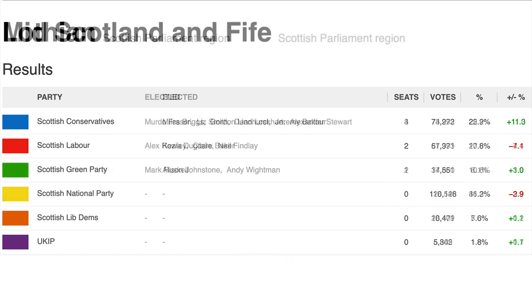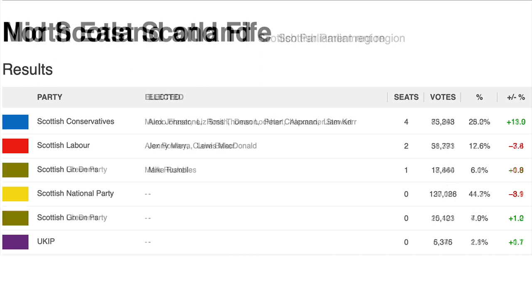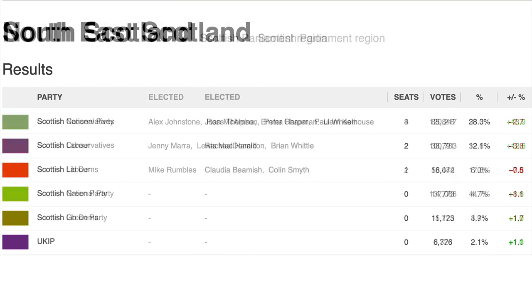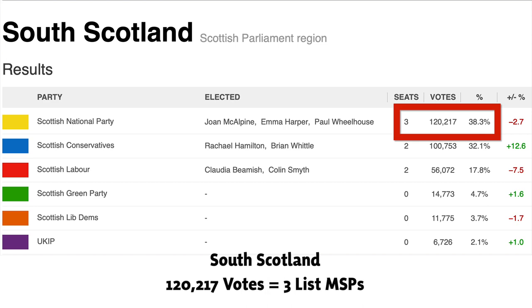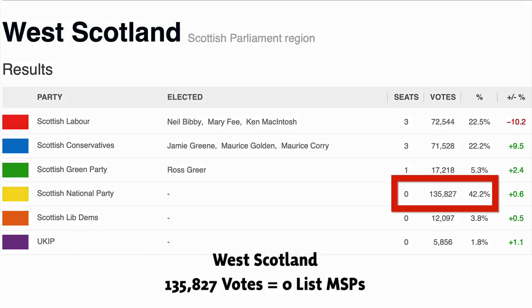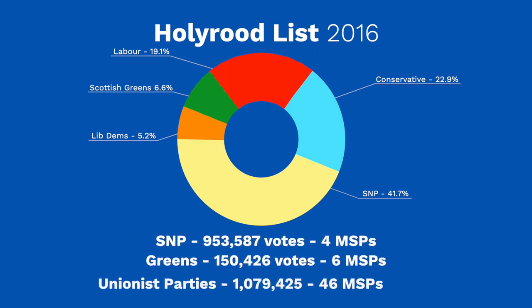Looking at the overall list vote across all regions in 2016, the SNP, with over 950,000 votes, picked up only 4 list seats. The Greens, with 150,000 votes, picked up 6, and the Unionist parties, with 49% of the votes — a little over 1 million in total — were awarded 46 list seats.